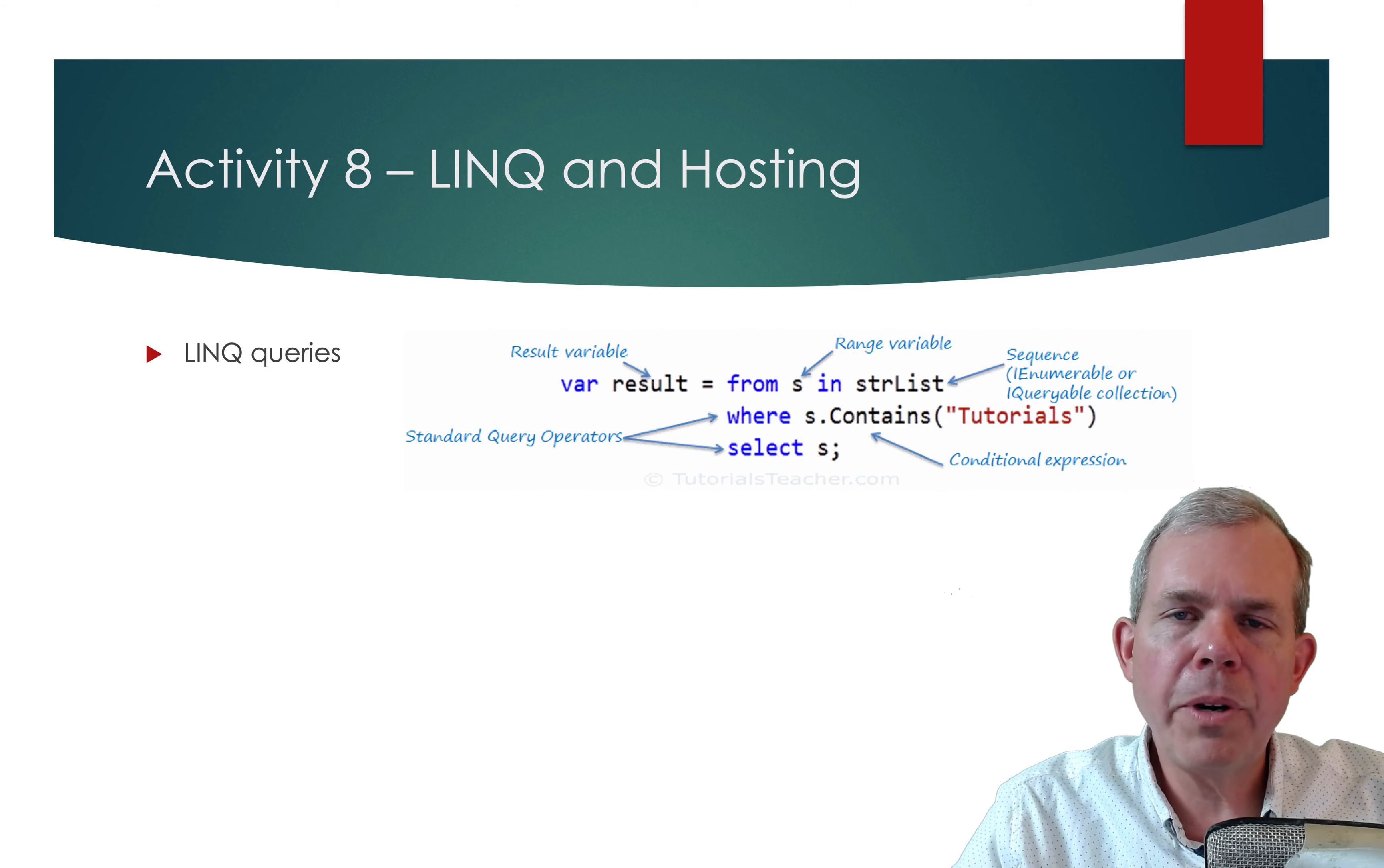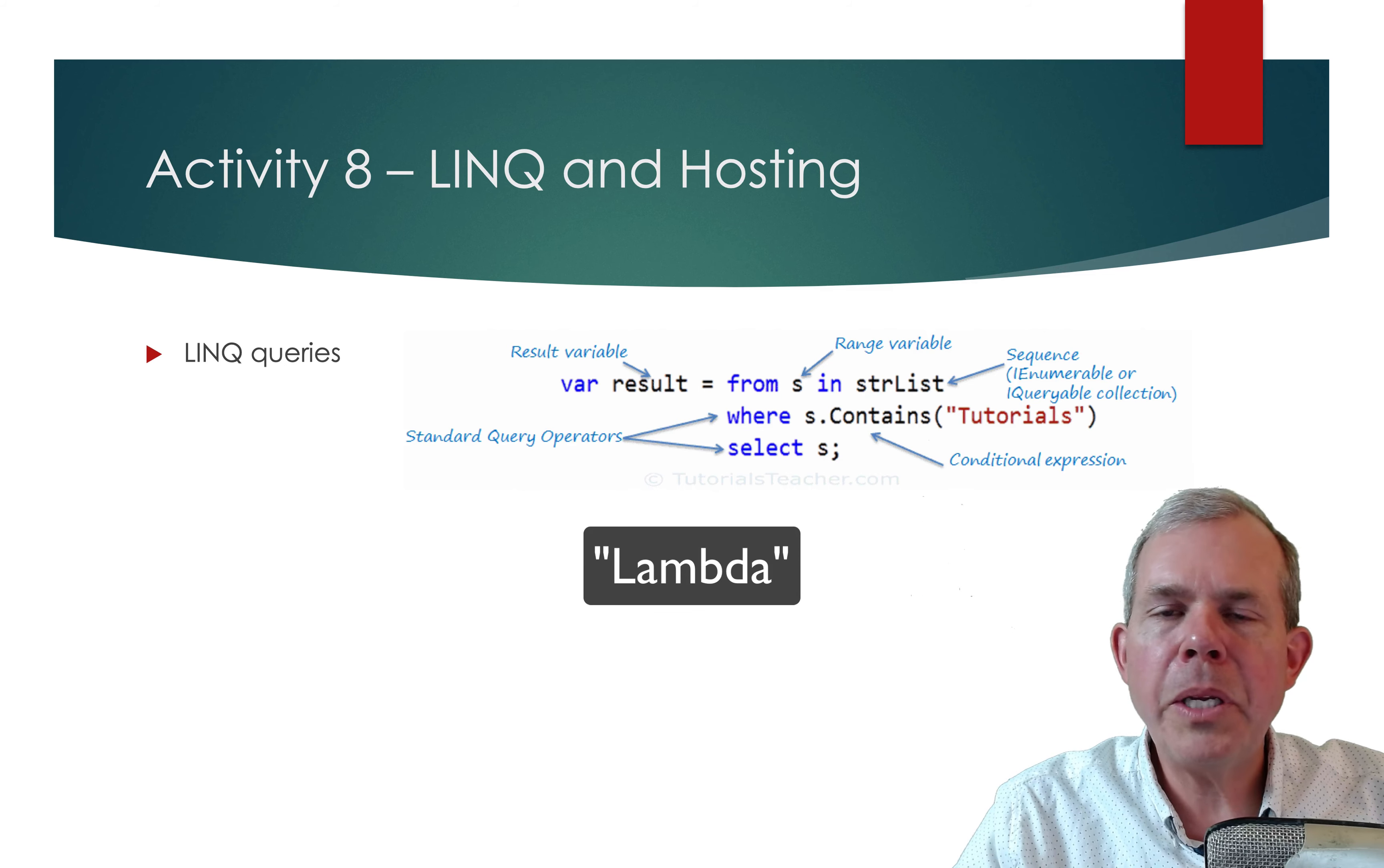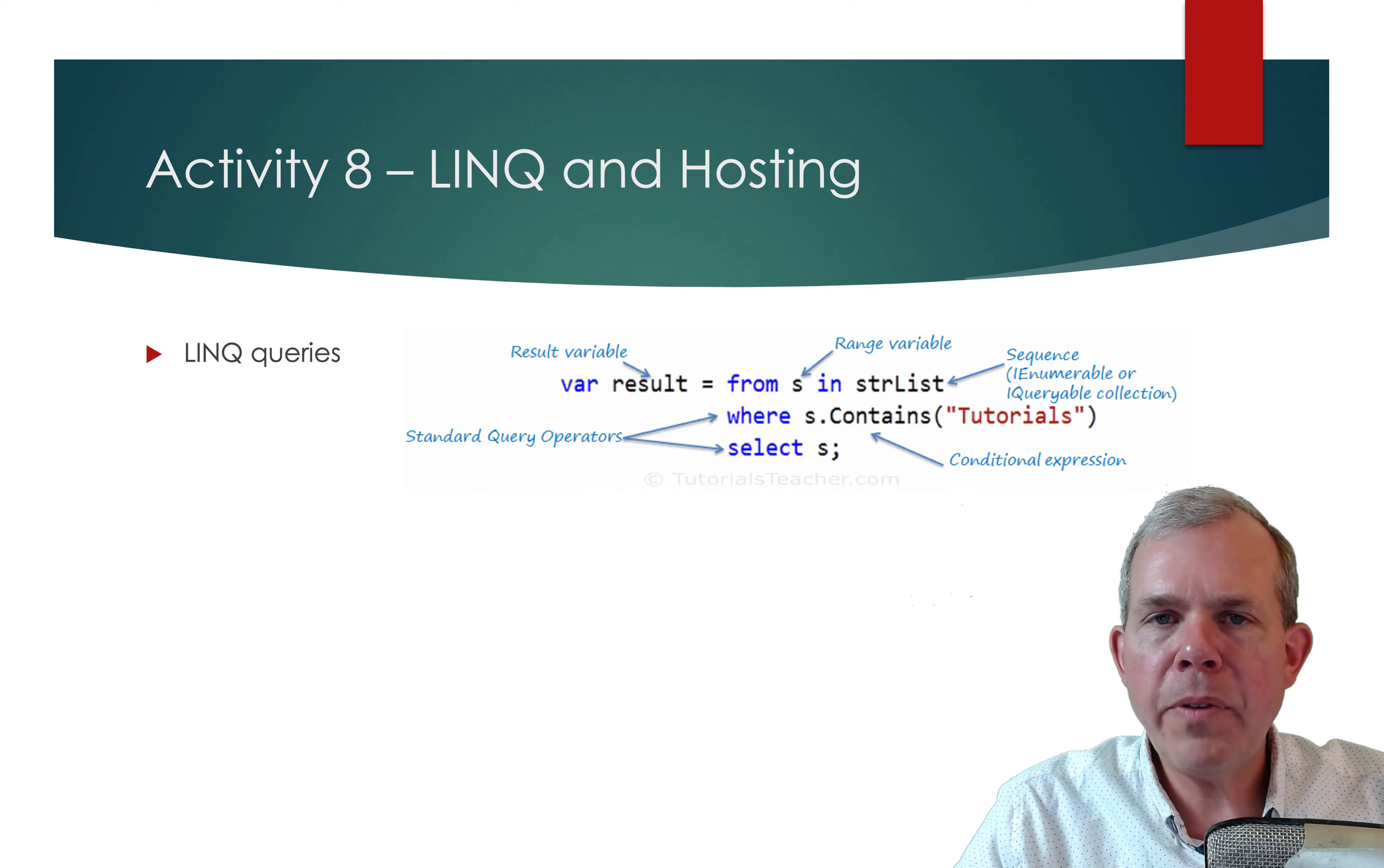We'll show you a lot more where you can do sorting and grouping, and also something called lambda expressions, which is an alternative way to do selections. So there'll be three different types of selections that we do in our activity.